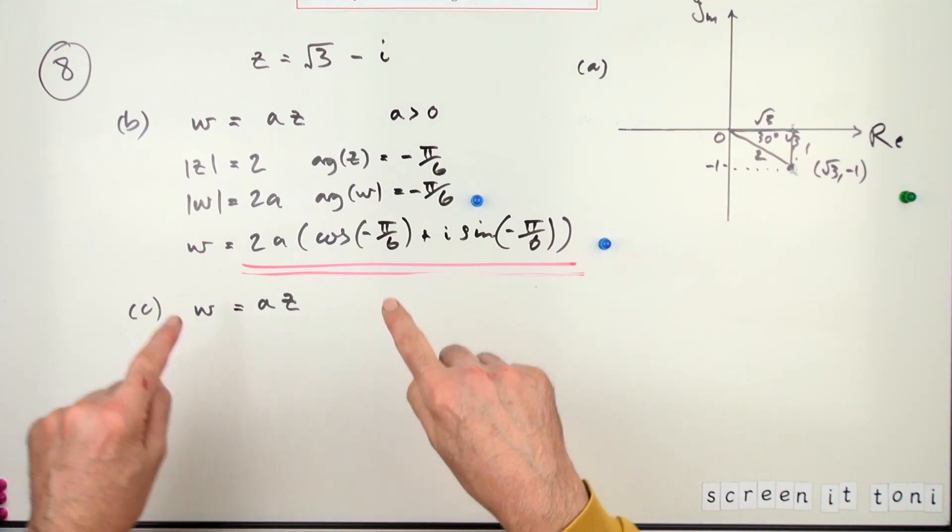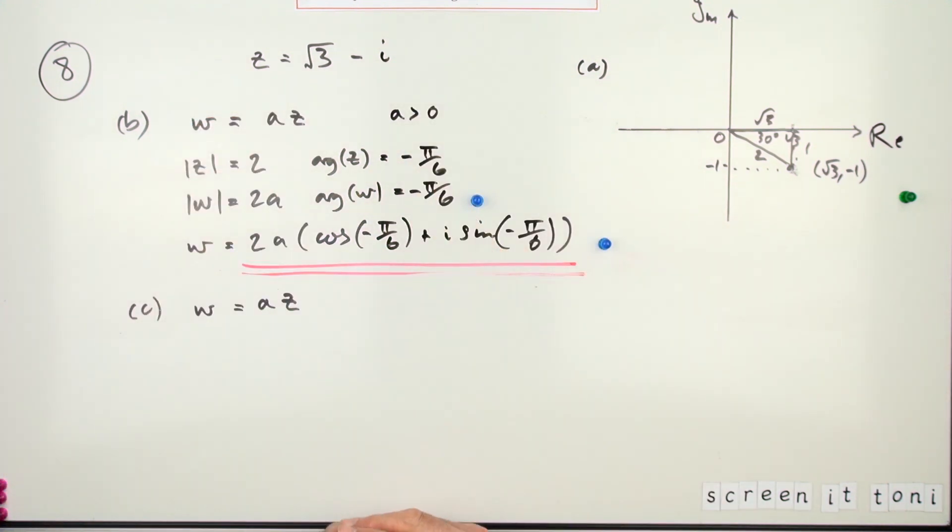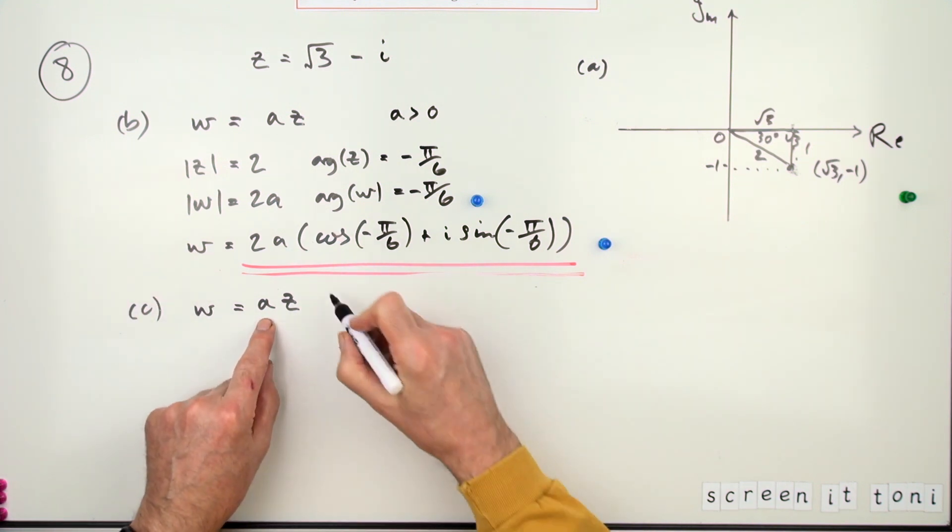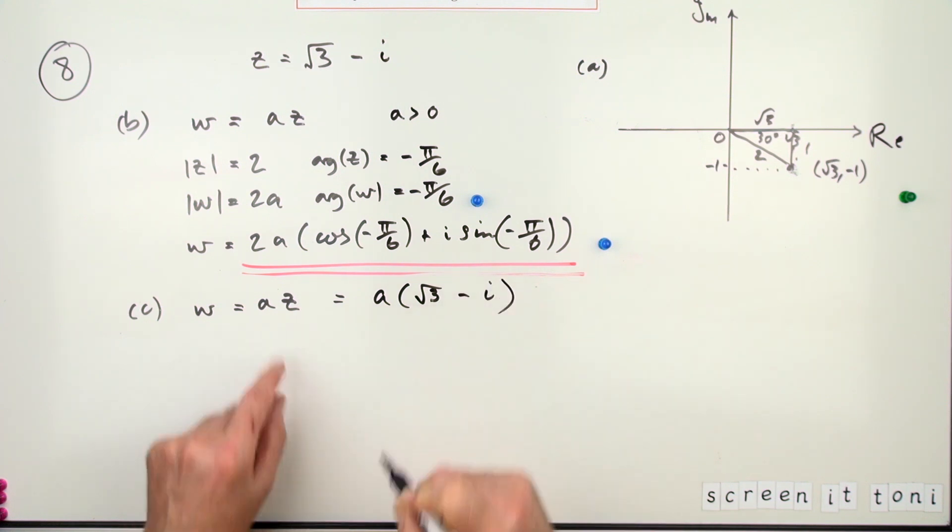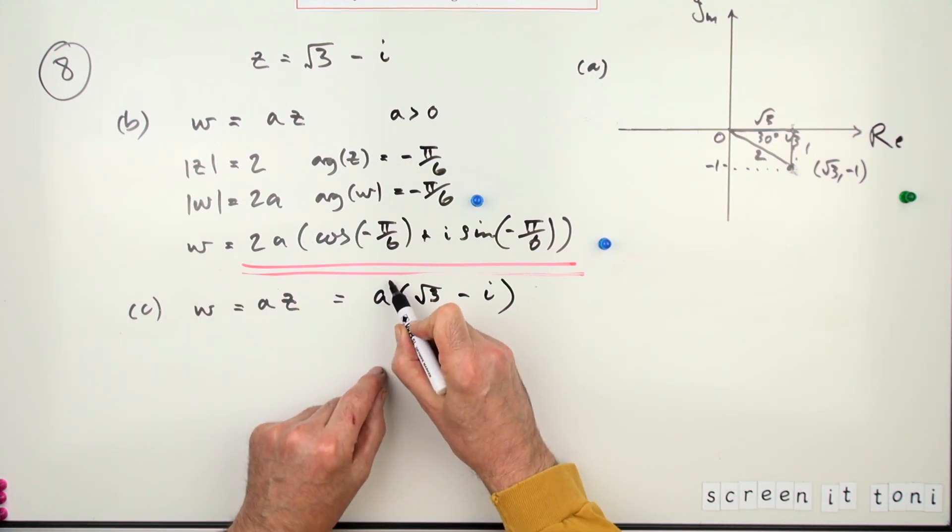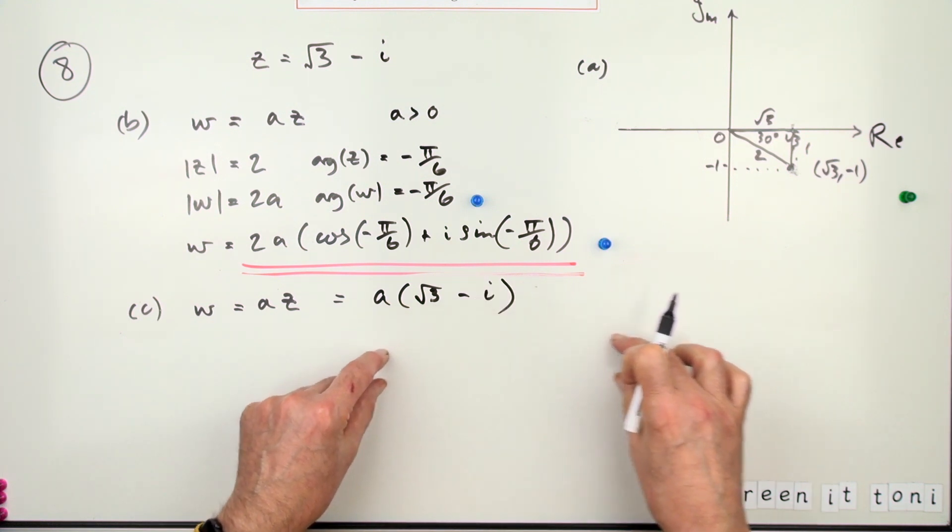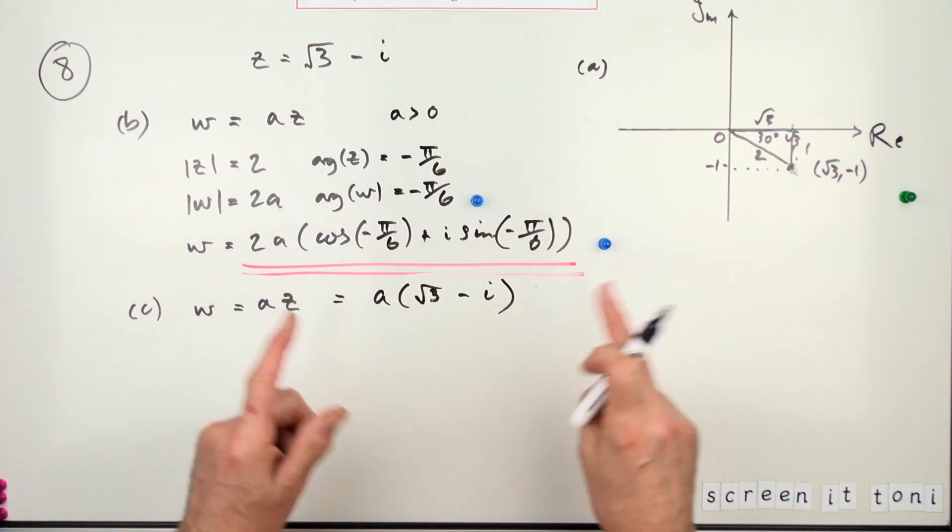Now, an alternative to that would just be to go back to the Cartesian form, since the answer was in that Cartesian form, and just find power 8 of that. So that would have been a times (√3 − i) for w. So what's that to the power 8? Well, you could do a to the power 8 and then that bracket to the power 8 and use the big binomial expansion of that if you wished. But you should have done it by the polar form—anybody using de Moivre's.